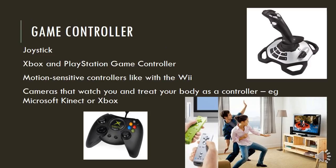A game controller comes in quite a lot of different types. You get a joystick, as in the top right picture. These are used with gaming. You also get Xbox and PlayStation game controllers — that's the black item at the bottom left with the colored controls. And then you get motion sensitive controllers like with the Wii, which can interpret how you're moving. There are also cameras that watch you and treat your body as a controller, as in the Microsoft Kinect or Xbox.